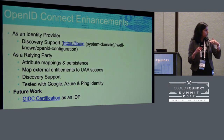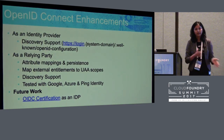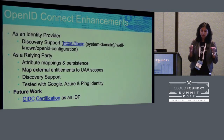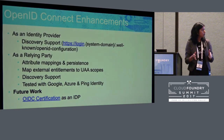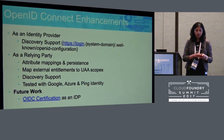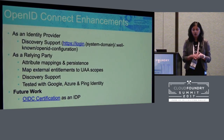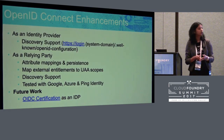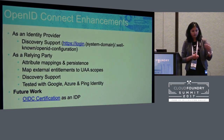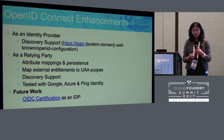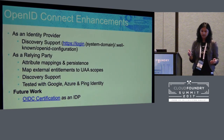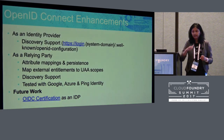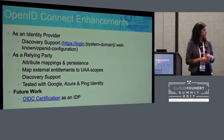We also support mapping external entitlements to UAA scopes. In UAA we have this concept of permissions referred to as scopes, which define what access is permitted to a certain API or resource. What we can do is map entitlements — external group memberships — to UAA scopes. So if you onboard Azure and want to share external group information, you can create a mapping policy that says if the user is an admin in the Azure directory, provide a specific UAA scope from an API security perspective.